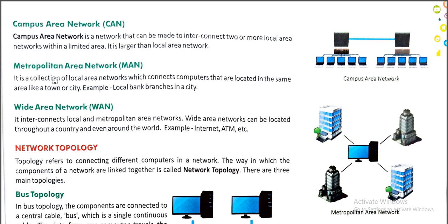Next is MAN — Metropolitan Area Network. It is a collection of Local Area Networks which connects computers located in the same city. MAN is used in a city — for example, if there is a bank with several branches in a city, we can connect those branches with the help of MAN, the Metropolitan Area Network.